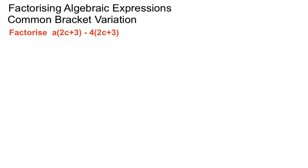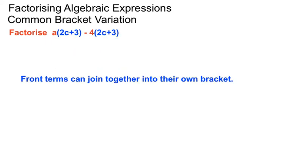Can you see that the bracket items are the same as each other? You've got an a in front of the bracket and a -4 in front of the bracket. Those brackets have the same things in them, we call them common. So those front terms, the letters or numbers a and -4, can join up into their own bracket.